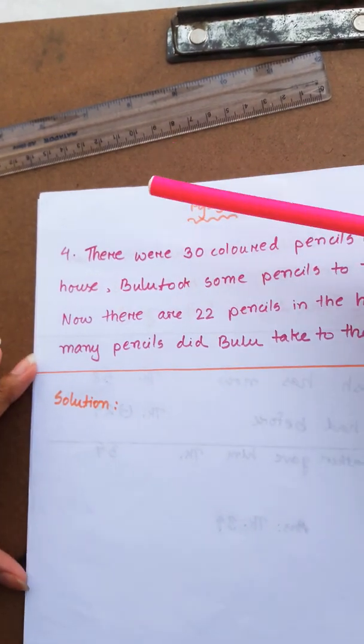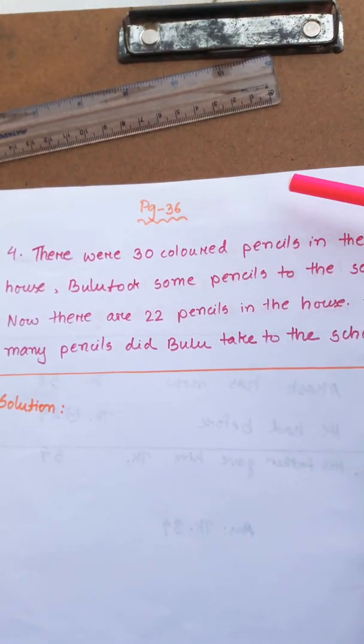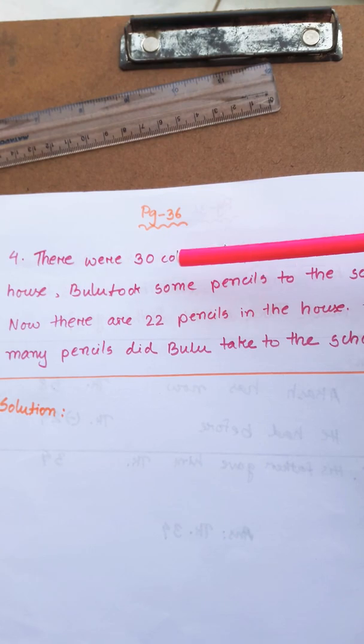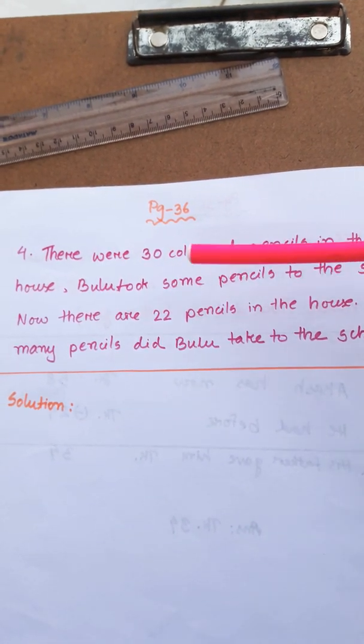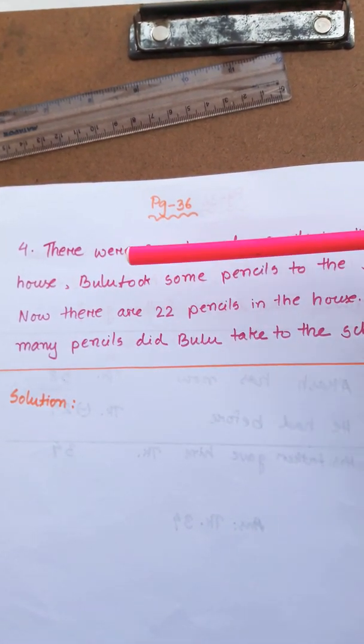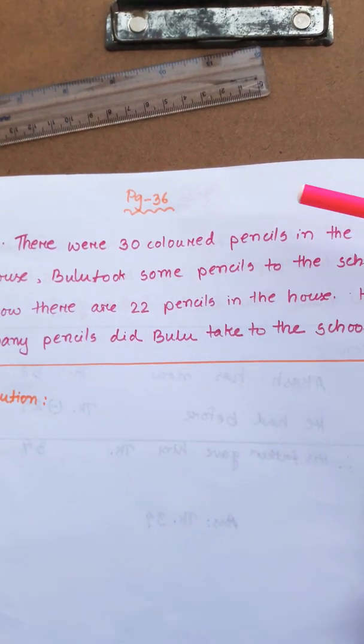The next math is problem 4. There were 30 colored pencils in the house. Bulu took some pencils to the school. Now there are 22 pencils in the house. How many pencils did Bulu take to the school?